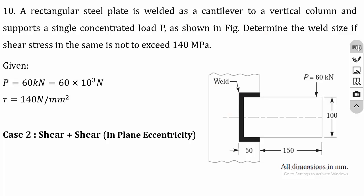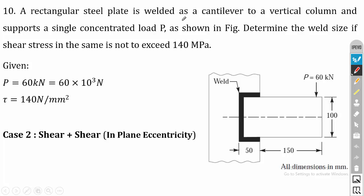In the previous lecture we solved a simple problem on in-plane eccentricity. In this lecture we are going to solve another problem. A rectangular steel plate is welded as a cantilever to a vertical column and supports a single concentrated load P as shown in the figure. The weld outline is like a C section and the load is acting on the same plane.